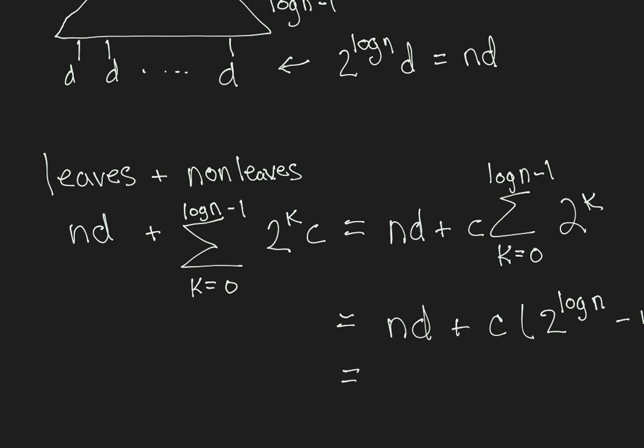So, this turns into c times 2 to the next power of 2 minus 1. And that, in turn, is c times n minus 1.